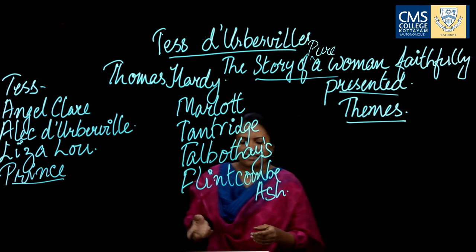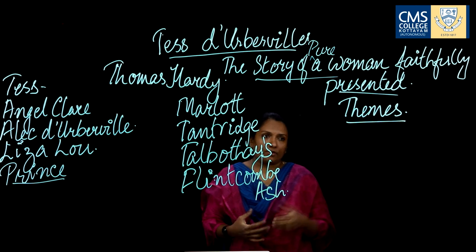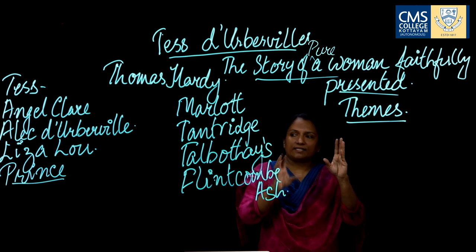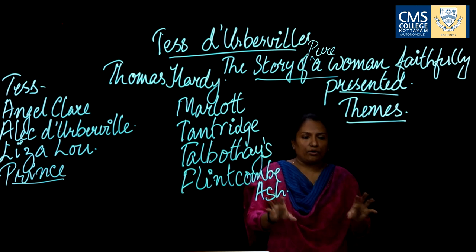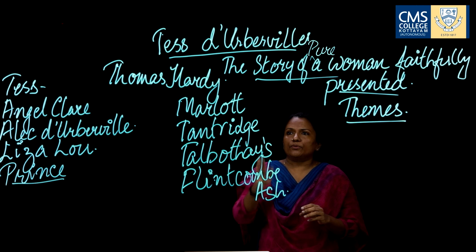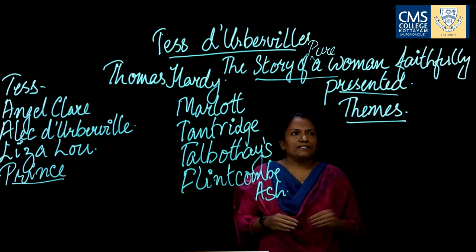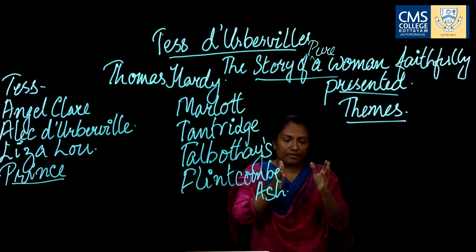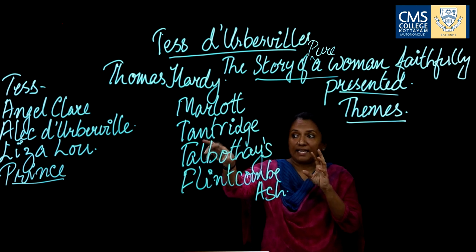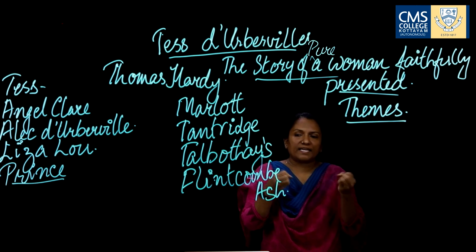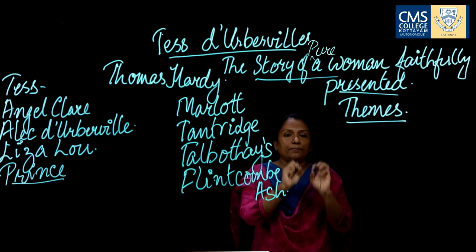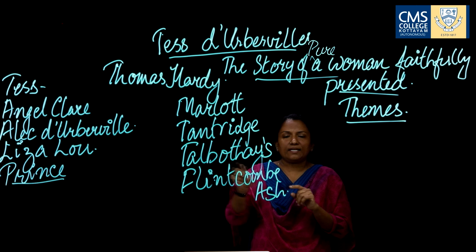If we were to draw the plot of Tess of the D'Urbervilles, it would be a triangular plot with Tess at the top and Angel and Alec at the lower angles. The whole novel begins with a May dance where Angel Clare and Tess have a glimpse of each other — not enough to fall in love — and then we see Tess's interaction with Alec.